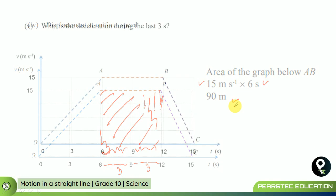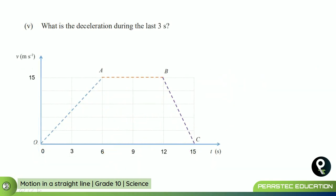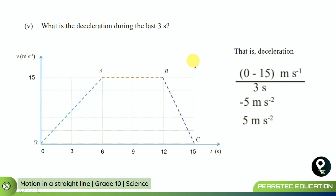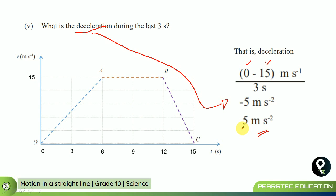Now they are asking for deceleration during the last three seconds. The final velocity is zero and the initial velocity is 15, so deceleration is zero minus 15 divided by 3, which gives minus 5 meters per second squared. The deceleration is 5 meters per second squared.